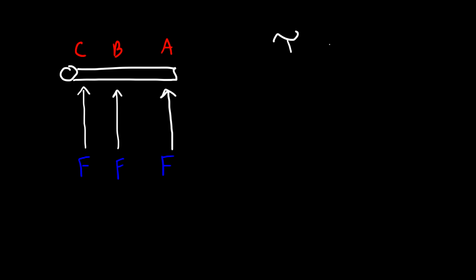If you have a door and apply a force at three locations — points A, B, and C — it's easier to push the door at position A but very difficult at position C. Even though the forces are the same, there is a quantity that's different, and that quantity is known as torque. Torque is the force times the moment arm or lever arm. In the case of position A, the moment arm is greater than that of position B.